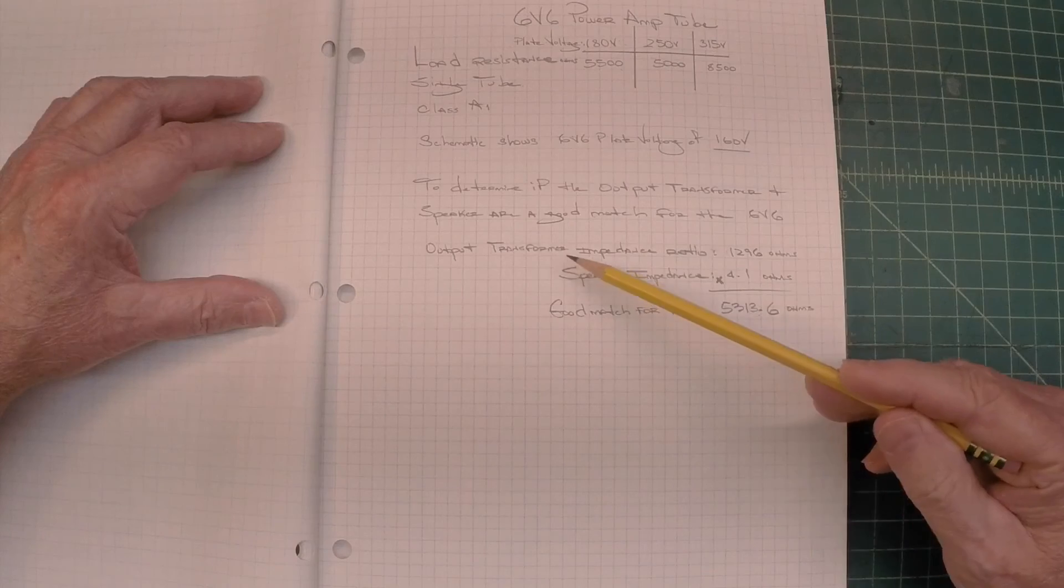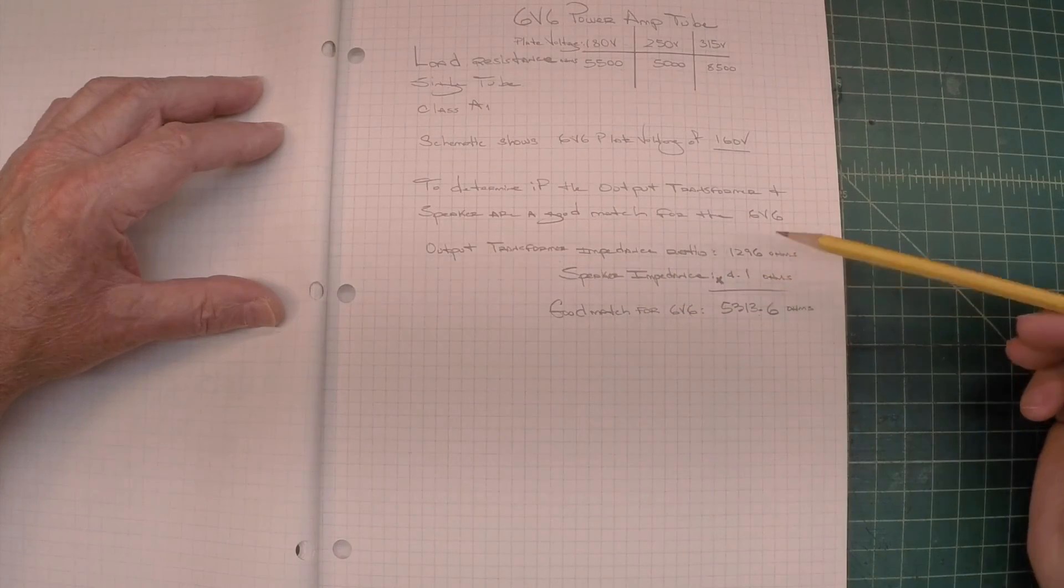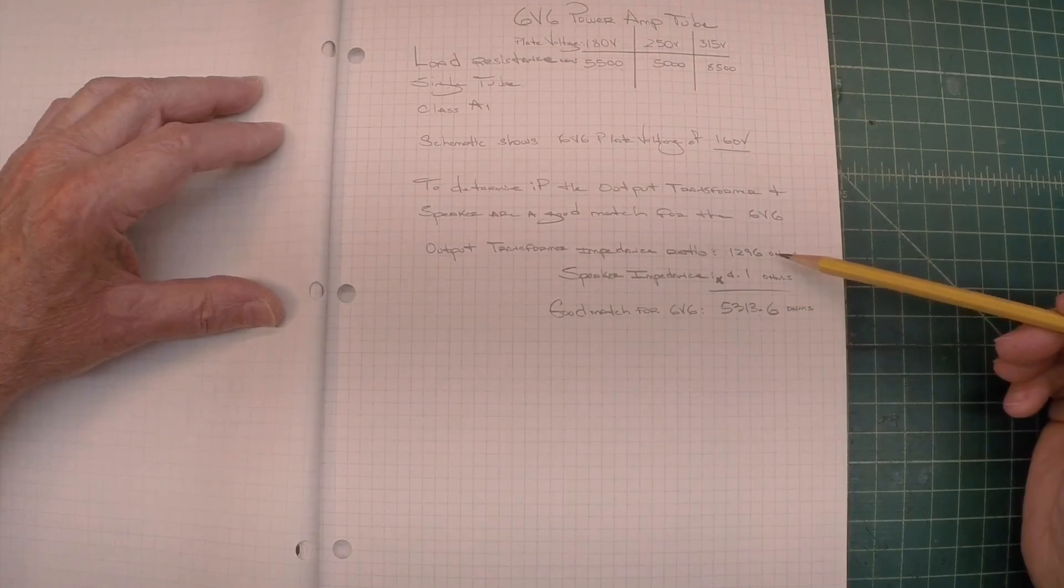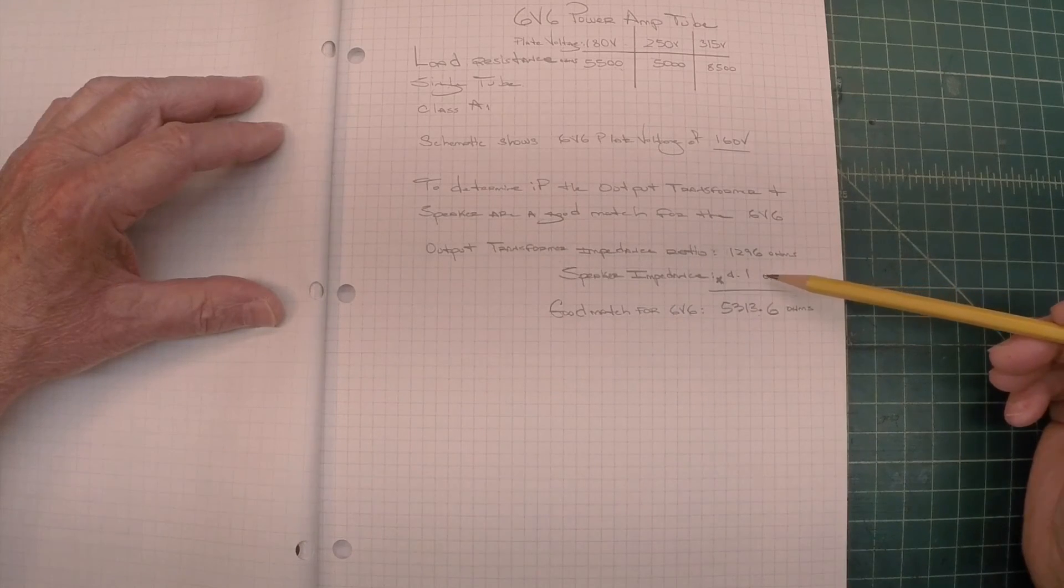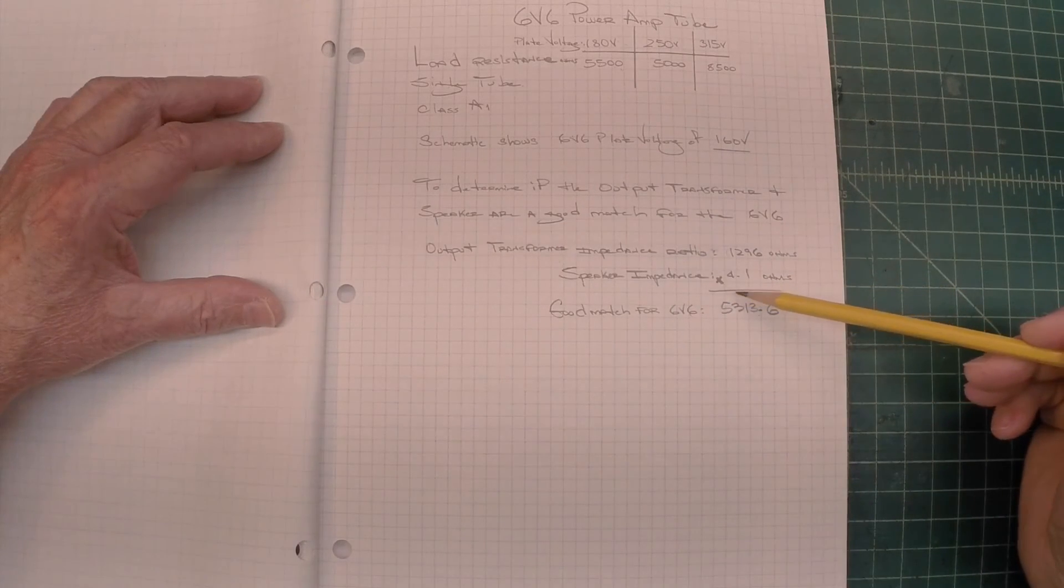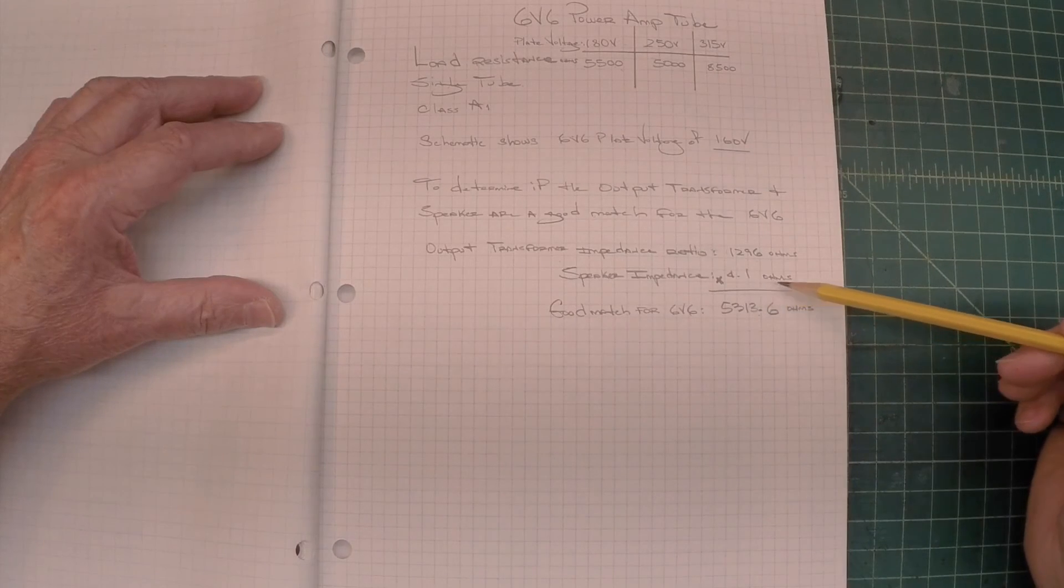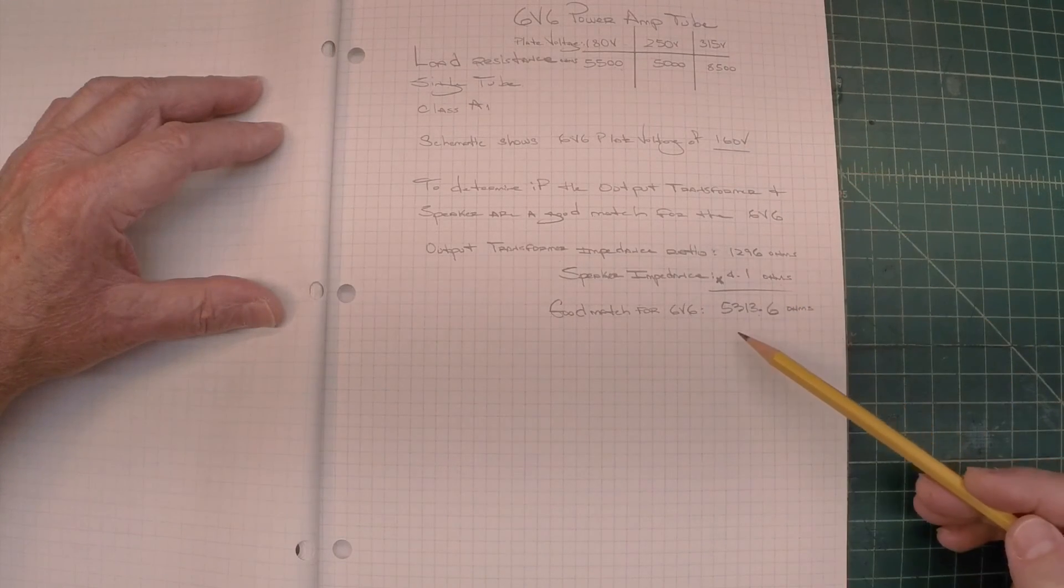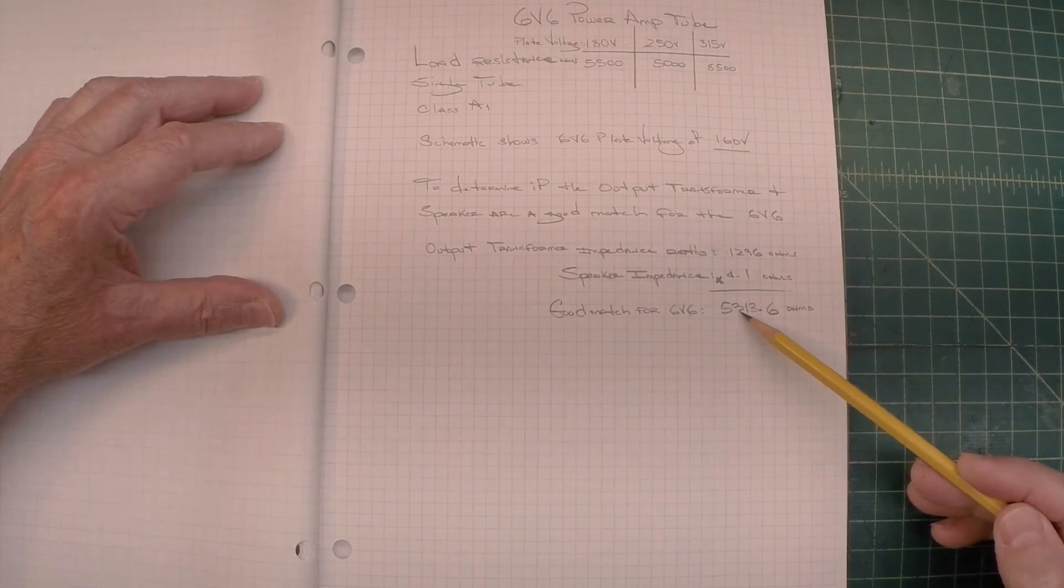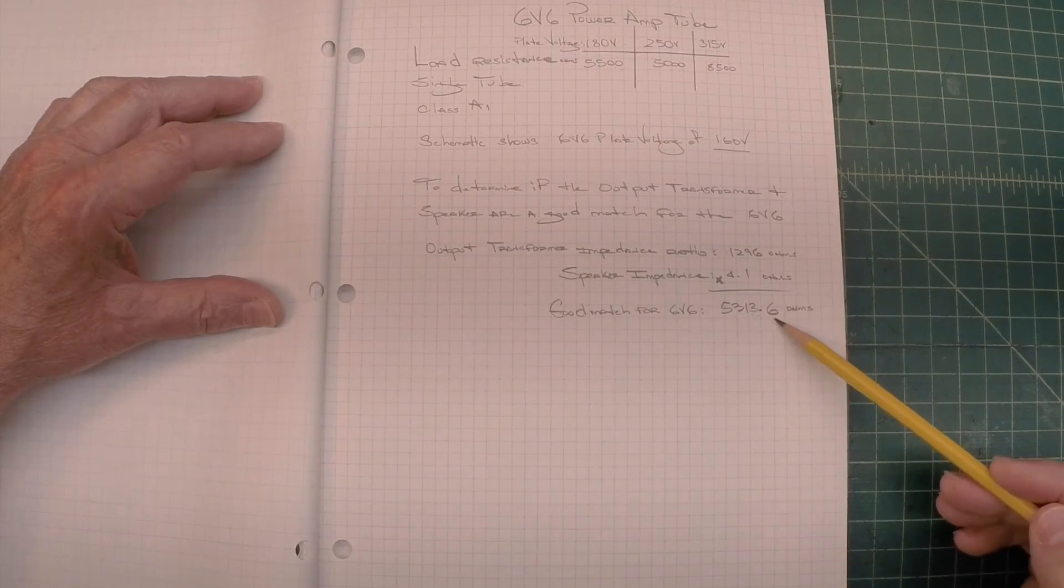All I'm doing is taking the output transformer impedance ratio, which we calculated at 1296 ohms, I'm multiplying that by what I calculated the speaker impedance to be, 4.1 ohms. And you can see that gives me a match of 5313.6 ohms.